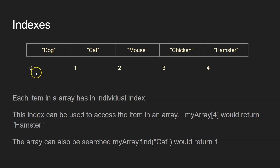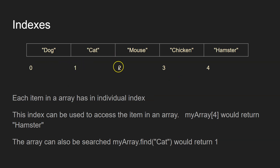In Python we start indexing at zero. So the first item in the list, item zero, is dog. And, for instance, the one, two, three, fourth item in this array here is chicken. Each item can be accessed via that number and that number is known as its index.